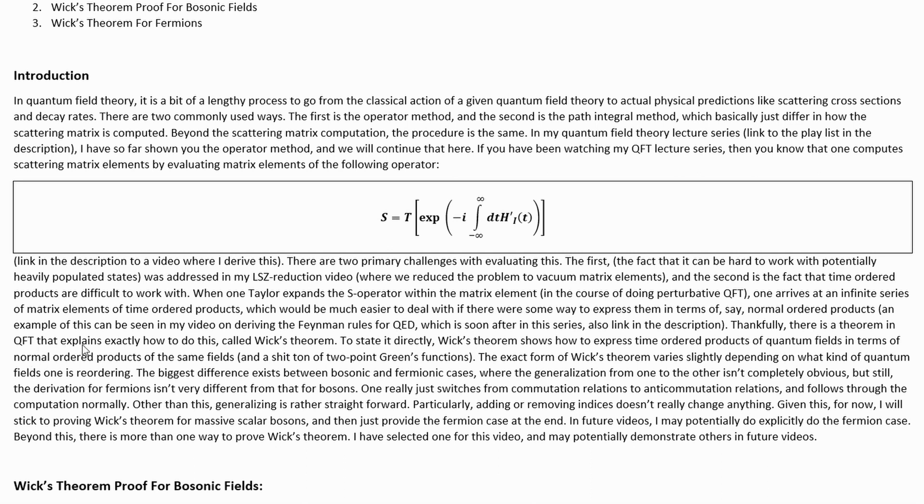Thankfully, there is a theorem in quantum field theory that explains exactly how to do this, called Wick's theorem. To state it directly, Wick's theorem shows how to express time-ordered products of quantum fields in terms of normal-ordered products of the same fields, and a shit-ton of two-point Greens functions, especially when you're dealing with a time-ordered product of a lot of fields. The exact form of Wick's theorem varies slightly depending on which kind of quantum fields one is reordering. The biggest difference exists between bosonic and fermionic cases, where the generalization from one to the other isn't completely obvious,